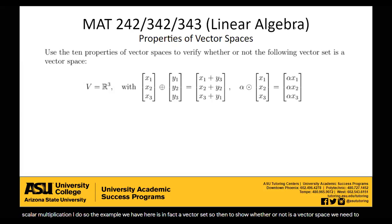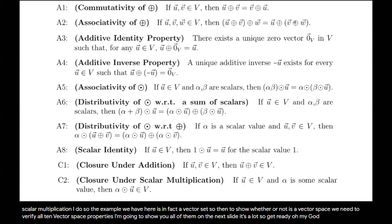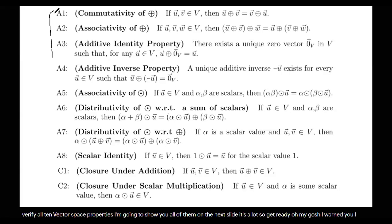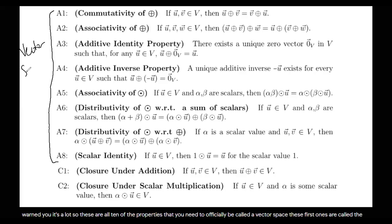I'm going to show you all of them on the next slide — it's a lot, so get ready. These are all 10 of the properties that you need to officially be called a vector space. The first eight are called the vector space axioms, and the last two are called your closure properties. You need all 10 of these in order to be considered a vector space.